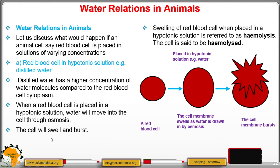So the swelling and bursting of the red blood cell when placed in a hypotonic solution — that is, a lowly concentrated solution — is called hemolysis, and the cell is said to be hemolyzed.